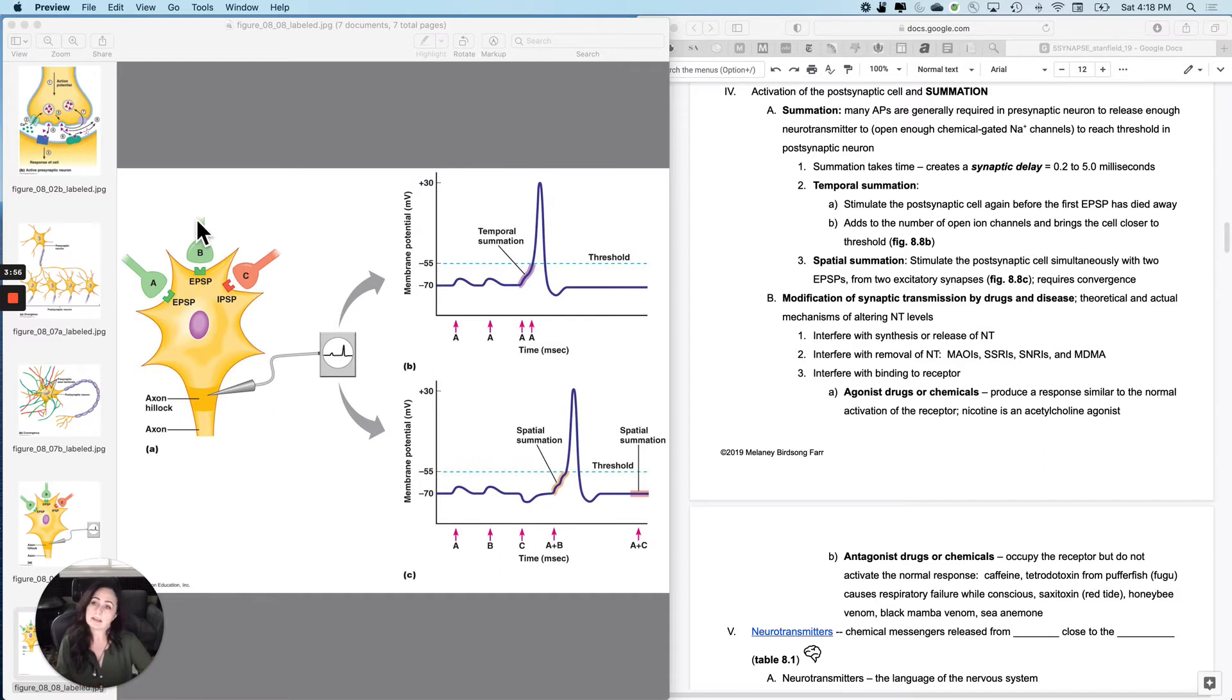But what if instead of stimulating A more frequently, I stimulate A and B simultaneously? Then they release a depolarizing neurotransmitter that binds to a ligand-gated sodium channel, open them at the same time, and make it more likely that this axon hillock will hit threshold. That is not a frequency stimulation, not temporal, but over two different spaces. A and B simultaneously, spatial summation. And that can get me to threshold as well.